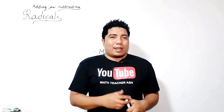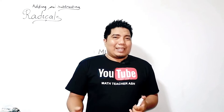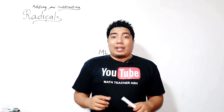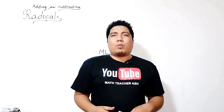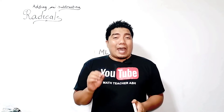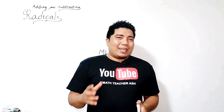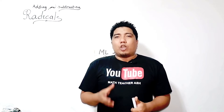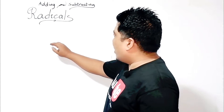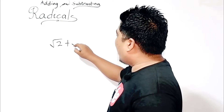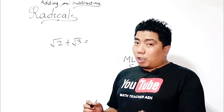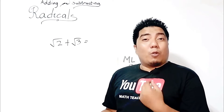Adding and subtracting radicals is just the same concept as adding and subtracting polynomials. However, in this case, we will be dealing with radical expressions. Remember what you have learned in adding and subtracting polynomials: you cannot add unlike terms. Therefore, in adding and subtracting radicals, you cannot also add or subtract unlike terms. For example, if you have square root of two plus square root of three, you cannot add these two because you don't have the same radical.